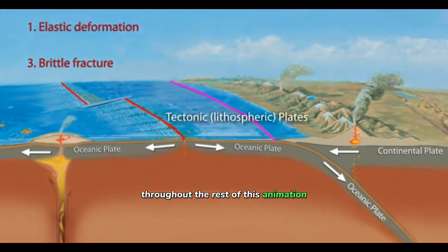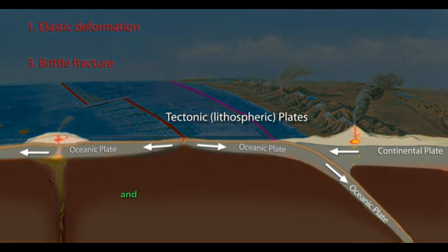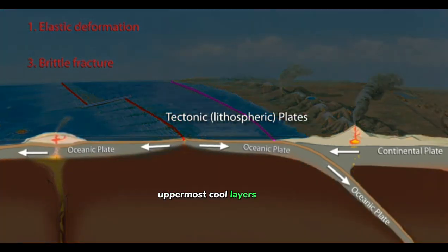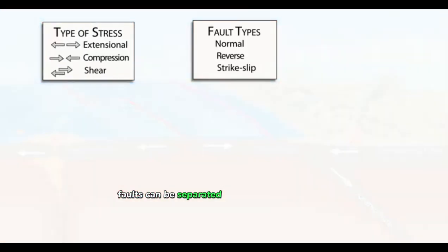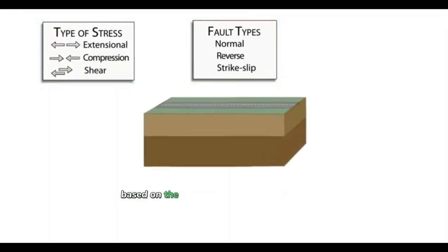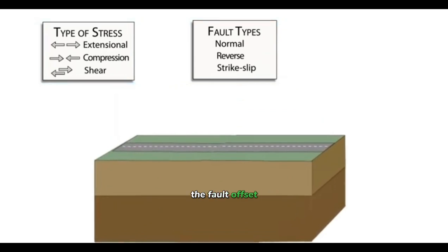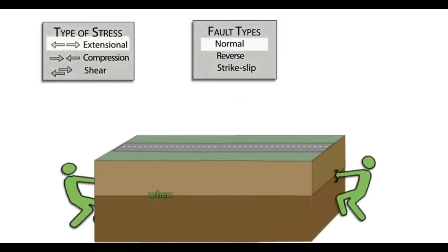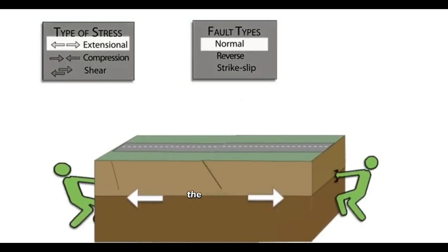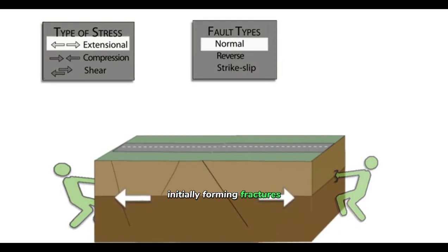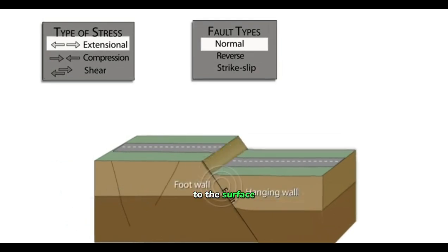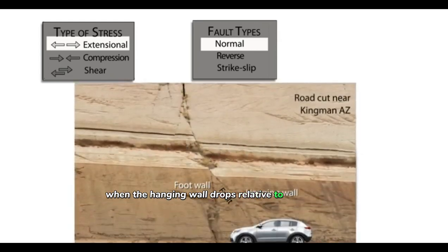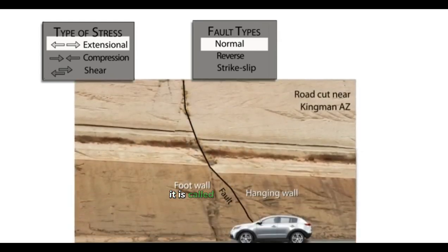Throughout the rest of this animation, we'll ignore ductile deformation and focus on earthquakes that occur in Earth's uppermost cool layers of rock called tectonic plates. Faults can be separated into three broad classes based on the direction of the stress that caused the fault offset. When extensional stress is applied, the rocks extend, initially forming fractures usually at an angle of less than 70 degrees to the surface. When the hanging wall drops relative to the foot wall, it is called a normal fault.